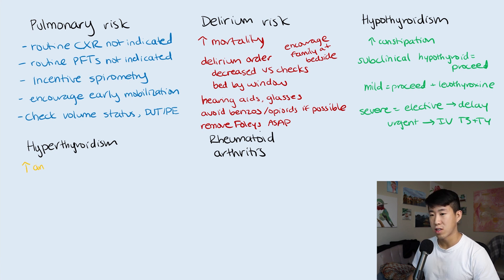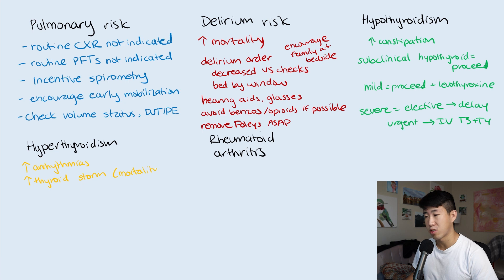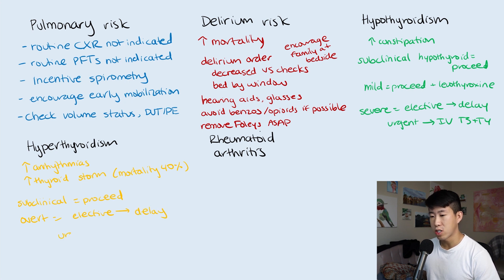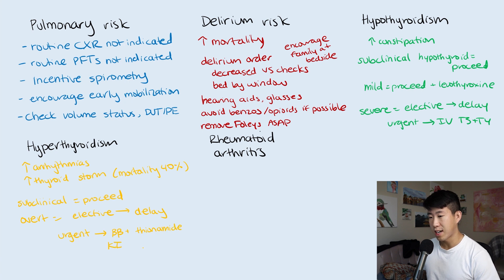For hyperthyroidism, there is increased risk of arrhythmias and risk of precipitating thyroid storm, which has a mortality rate up to 40%. For subclinical hyperthyroidism, proceed to surgery. For overt hyperthyroidism: if elective, delay until euthyroid. If urgent, proceed to surgery but start a beta blocker plus a thionamide — usually methimazole — and give potassium iodide solution. I would also consult endocrinology in this case.